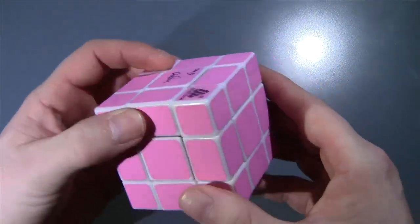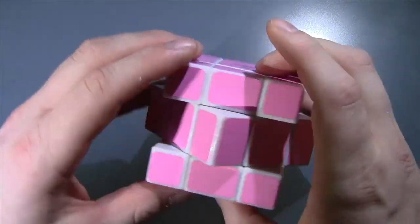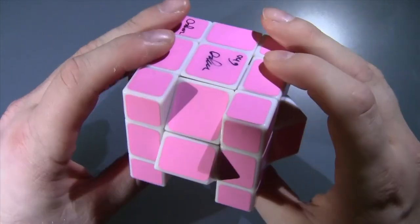this is called the mix-up cube and it looks like a 3x3, except you can turn some layers like this and then mix it up this way.